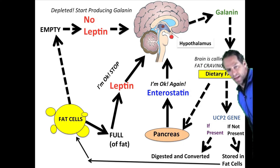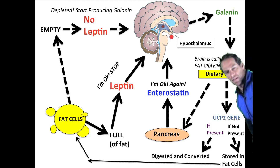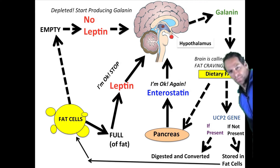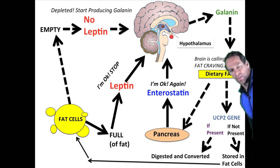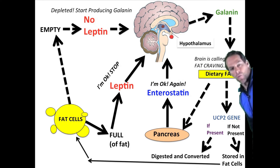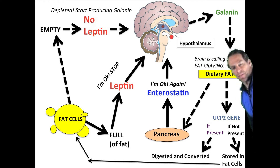Hi, my name is Daryl and this is another Fit Tip of the Day. In my last video blog, I discussed the feeding cycle and the key players in the appetite control system. As you recall, I talked about galanin, norepinephrine, neuropeptide Y, cortisol, and the hunger hormones called ghrelin and leptin. Today I'd like to talk about these chemicals in more detail and how they relate to fat metabolism.